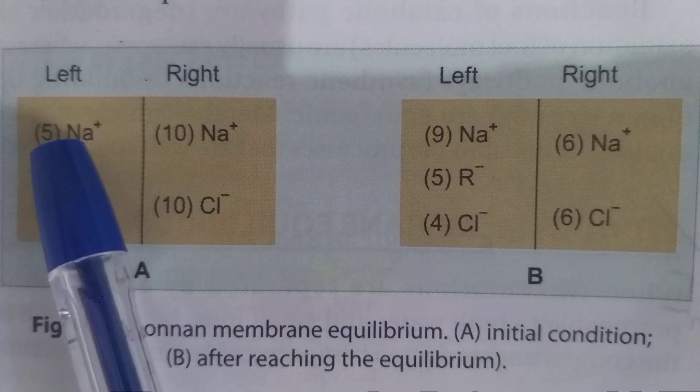The third point: the total number of a particular type of ion before and after equilibrium is the same. For Na+: before equilibrium you have 5 on the left and 10 on the right (total 15); after equilibrium, 9 on the left and 6 on the right (total 15). For Cl-: before equilibrium there are 10 in the right compartment; after equilibrium, 4 on the left and 6 on the right, summing to 10. As a result, when there is a non-diffusible anion on one side of a membrane, diffusible cations are more and diffusible anions are less on that side.